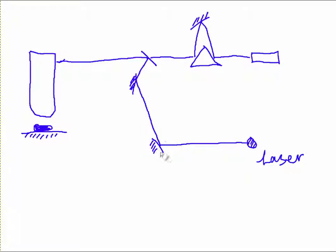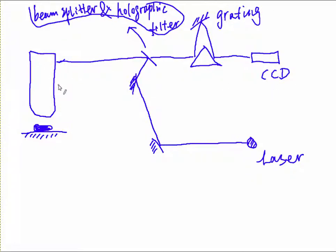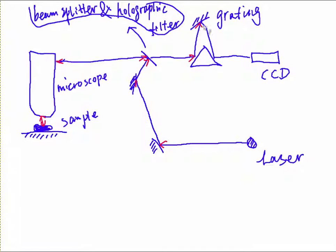In this diagram, we have a laser source, a beam splitter, and a holographic filter. We also have a grating system and a CCD detector to detect the Raman signal. We have a microscope above the sample. A laser line shines through the sample and returns back to the beam splitter, passes through the grating, and reaches the CCD.